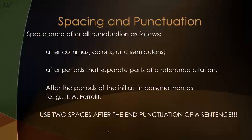I'm going to give you a bunch of examples of different things here. Spacing and punctuation: space once after all punctuation — after commas, colons, and semicolons, after periods that separate parts of a reference citation, and after the periods of the initials in personal names. Use two spaces after the end punctuation of a sentence. Basically, one space after everything except the end of a sentence, where you use two spaces.